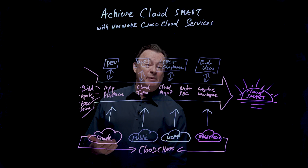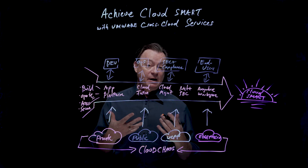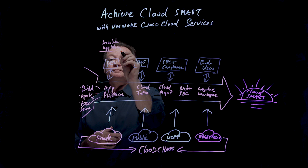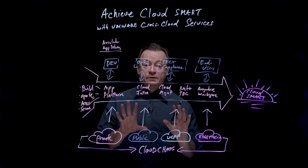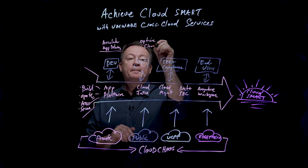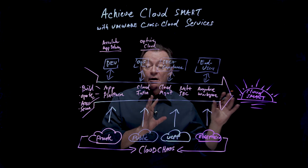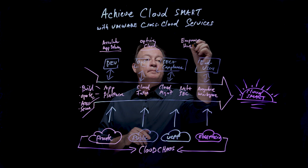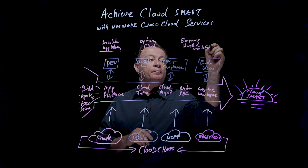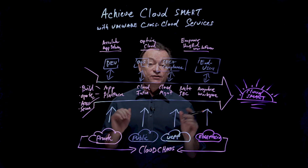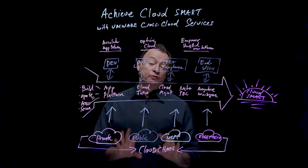So what are some of the outcomes for this journey? You can accelerate your application delivery, accelerate your cloud adoption, optimize your cloud, and empower your hybrid workforce to work from anywhere. VMware cross-cloud services is a portfolio of services to help you build, operate, access, and secure from anywhere, from any device — to move you from cloud chaos to CloudSmart. Thanks for watching.